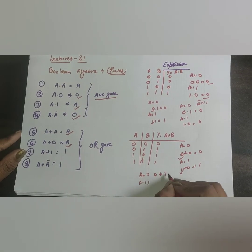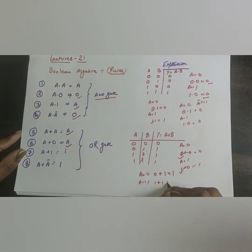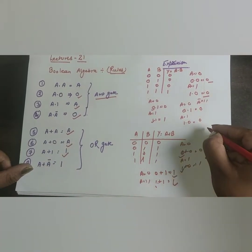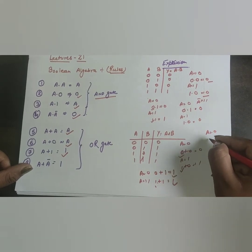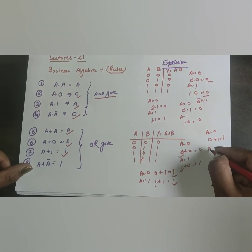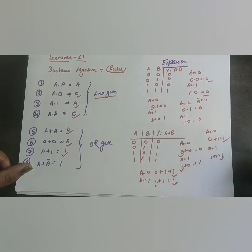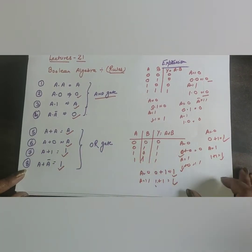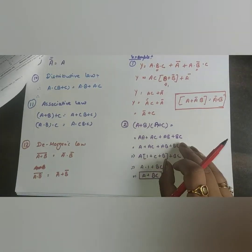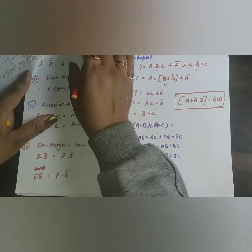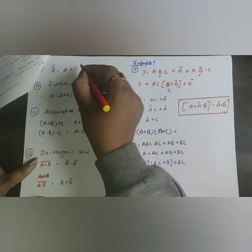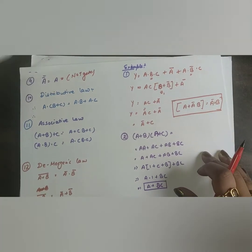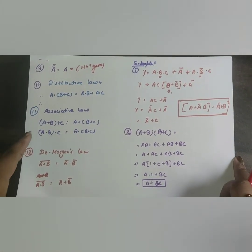For A+Ā: if A=0, 0+1=1; if A=1, 1+0=1. In both conditions we get 1, so A+Ā = 1. Also, A·Ā = 0. The NOT gate rule gives us the double bar: Ā̄ = A.